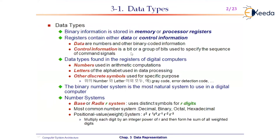There is also something called control information, which is a bit or group of bits used to specify the sequence of command signals. The computer system distinguishes data primarily in two types. We will talk more about control signals when we discuss the control unit.